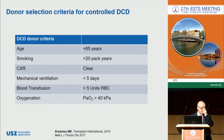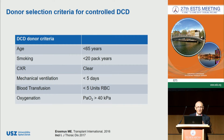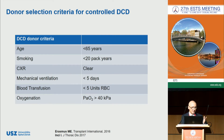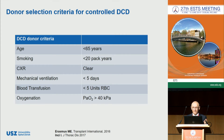How do we select donors in controlled DCD? Most centers apply the internationally agreed DBD donor criteria. Extended criteria donors — such as age over 65, smoking history of more than 20 pack-years, ICU stay of more than five days, or abnormal chest X-ray — are accepted in some programs.